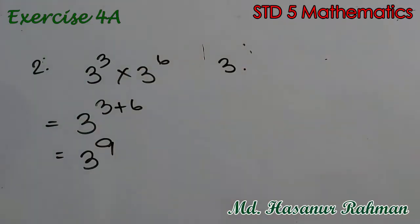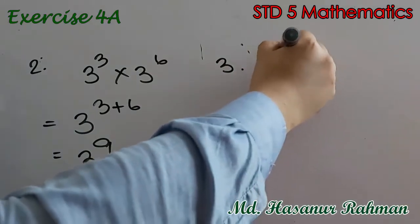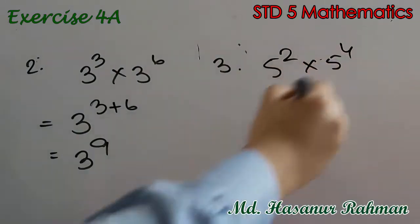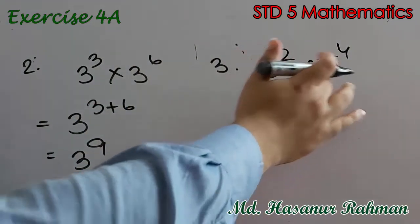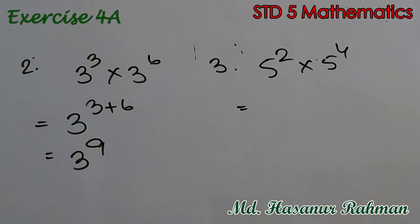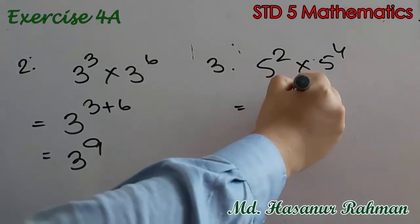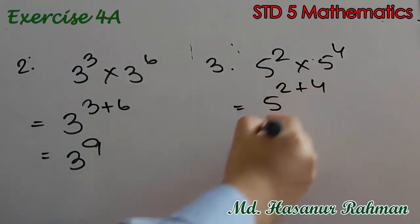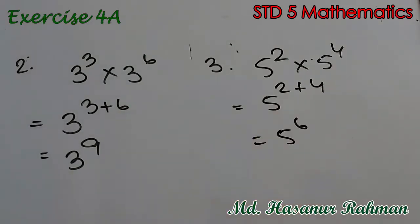Now number 3 says 5 squared into 5 to the power 4. Both bases are the same, so 5 to the power 2 plus 4 will be our answer — that is 5 to the power 6.